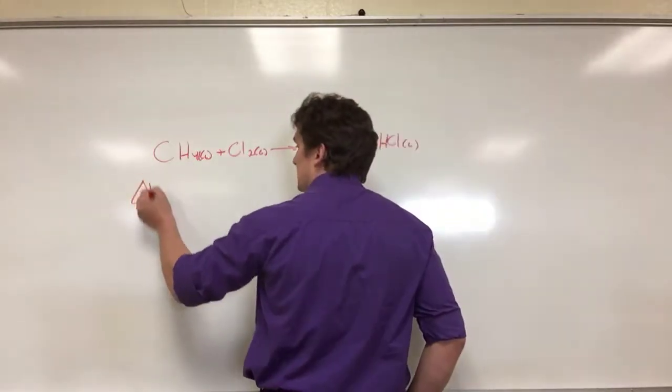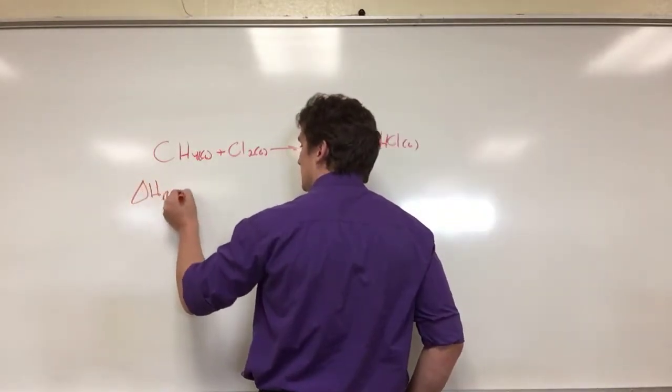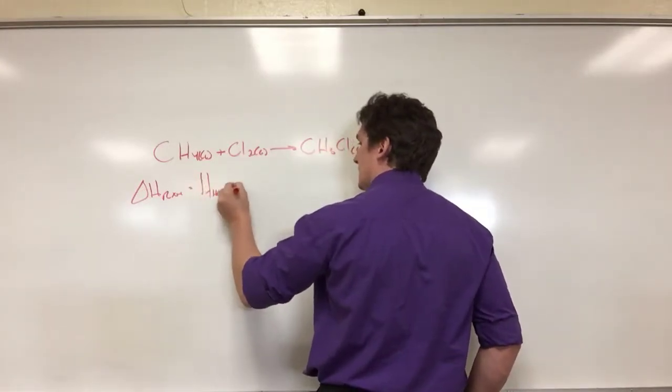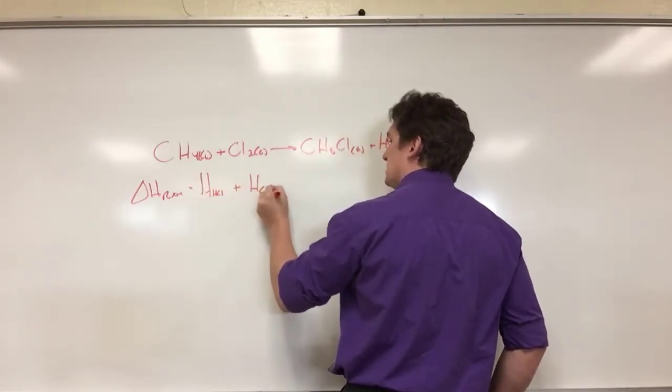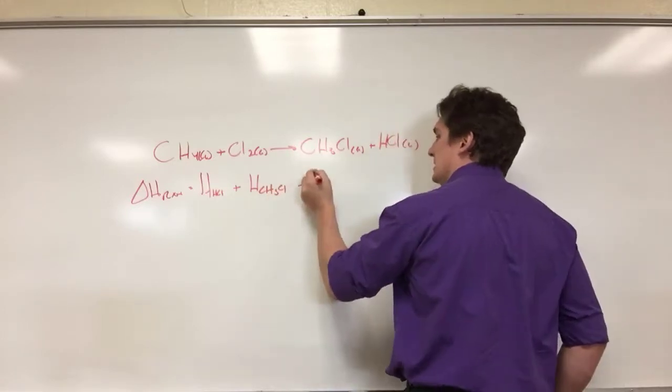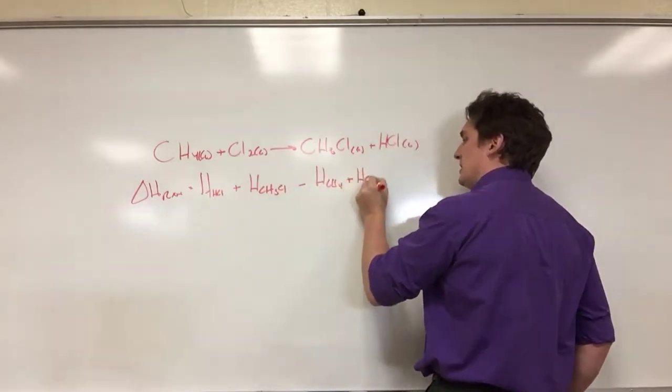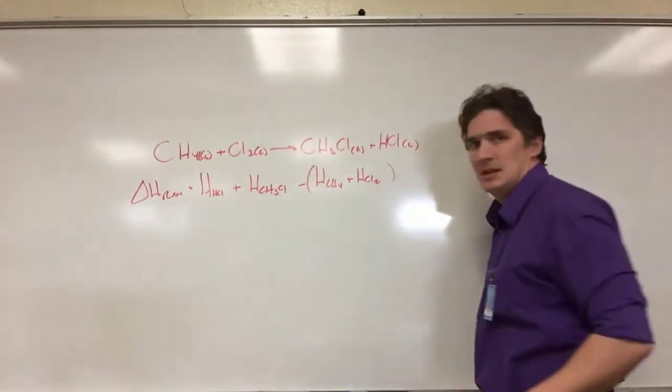So Hess's law says the delta H of this reaction is simply the heat of formation of HCl plus the heat of formation of CH3Cl minus the heat of formation of CH4 minus the heat of formation of Cl2.